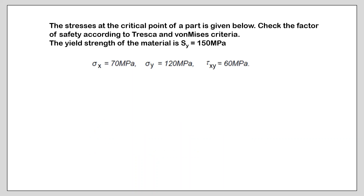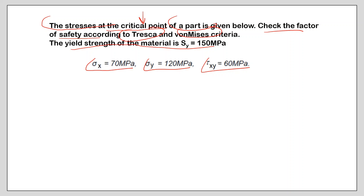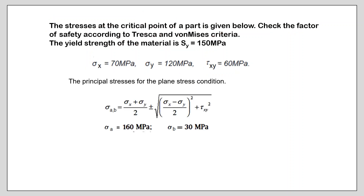In this video we will solve failure criteria problems. In problem number one, part A, the critical point is found and the stresses at this critical point are determined as sigma x equals 70 MPa, sigma y equals 20 MPa, and tau xy equals 60 MPa. The question is to check the factor of safety according to Tresca and von Mises criteria. The yield strength of the material is also given. We know the stress state and have to determine the principal stresses.